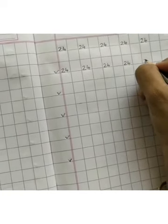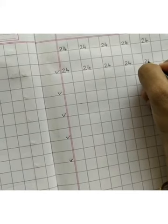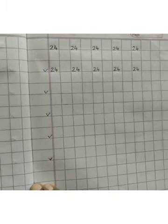Leave 1 box. And write. 24. This way, you have to finish all the lines.